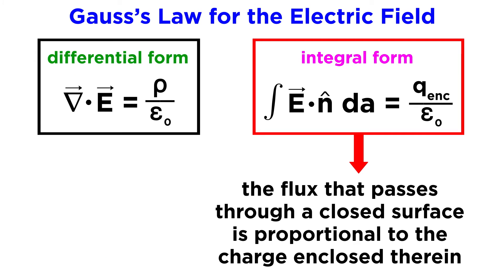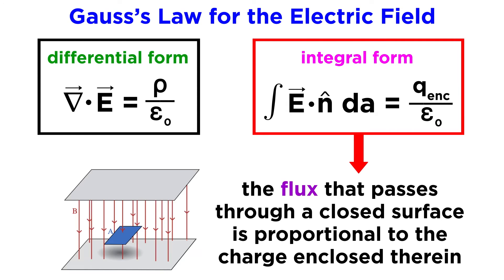This form states that the flux passing through a closed surface is proportional to the charge enclosed therein. The flux of an electric field can be thought of as analogous to the amount of fluid flow through an imaginary flat surface. This equation can be used to determine the flux of an electric field from the enclosed charge, or the total enclosed charge from the flux. Unlike the differential form, the integral form acts over a surface area.